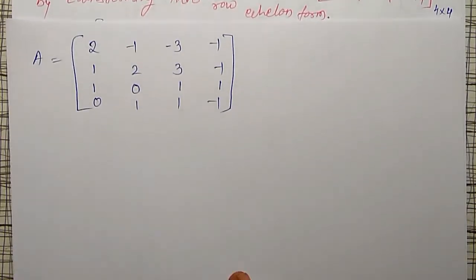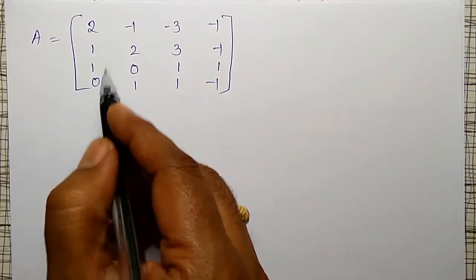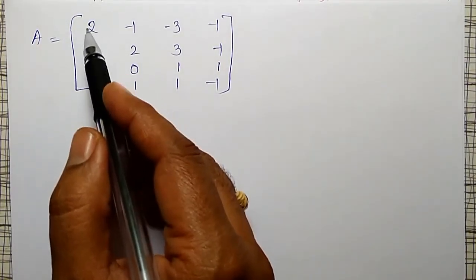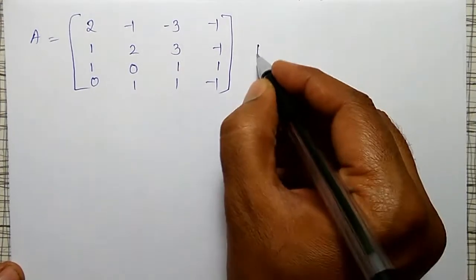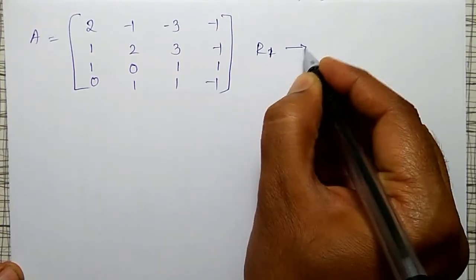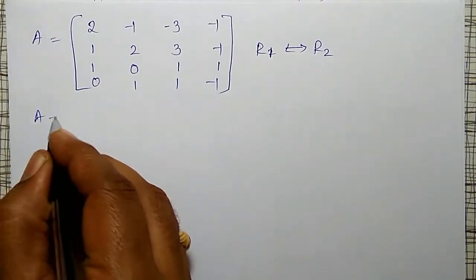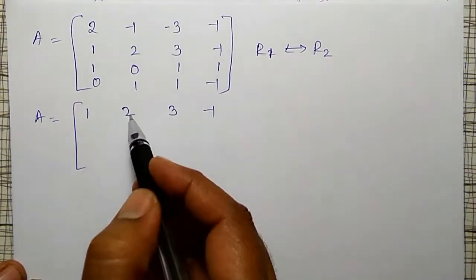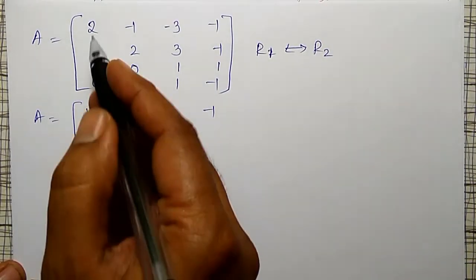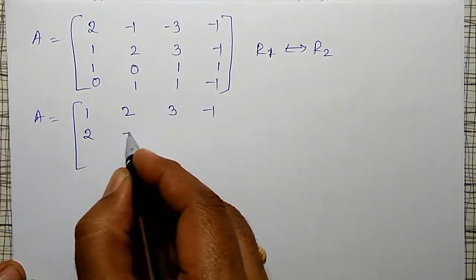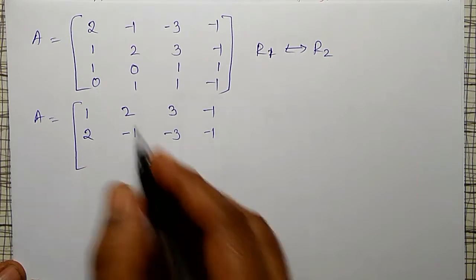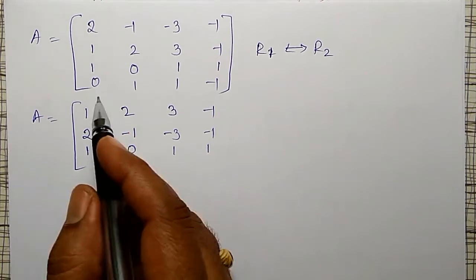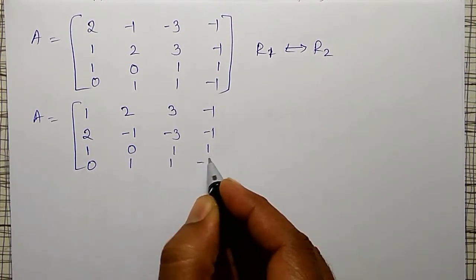I have to make the lower diagonal elements as 0. To apply the row operations, it is easy if the first row element is 1, so I will interchange R1 with R2. Then the matrix will become: first row 1, 2, 3, −1; second row (originally first) 2, −1, −3, −1; third row remains as 1, 0, 1, 1; and fourth row 0, 1, 1, −1 also remains.